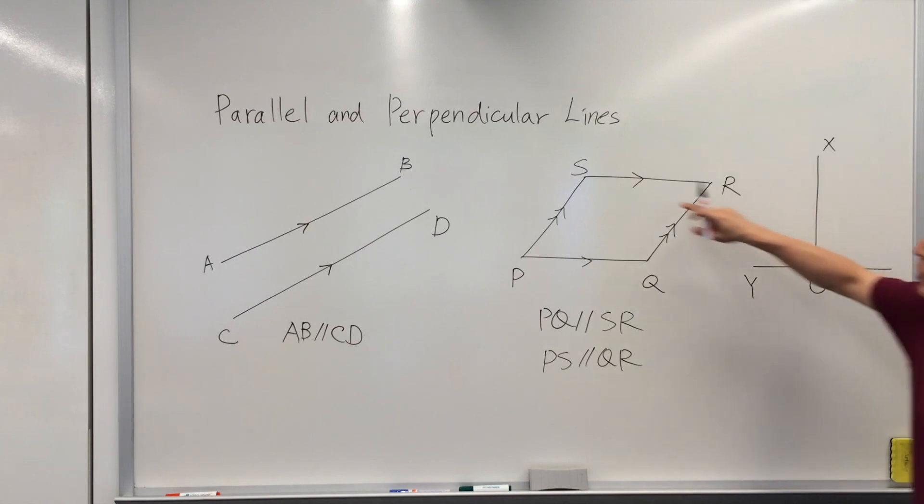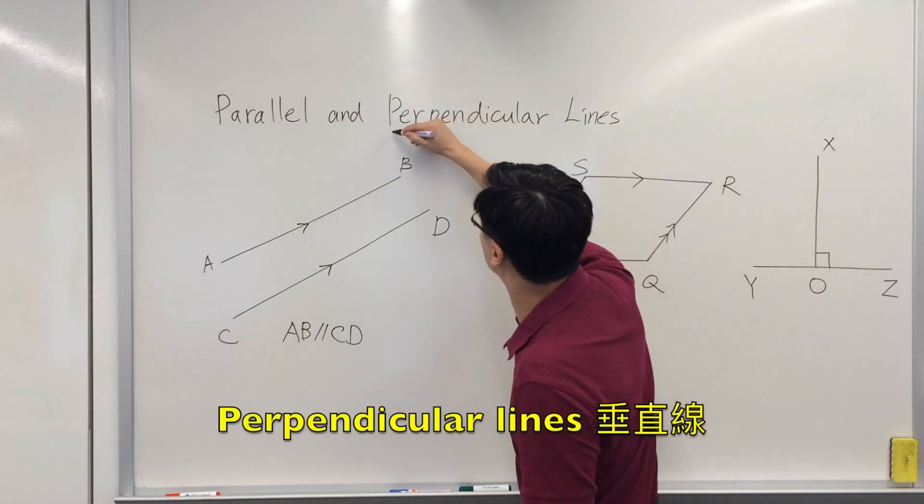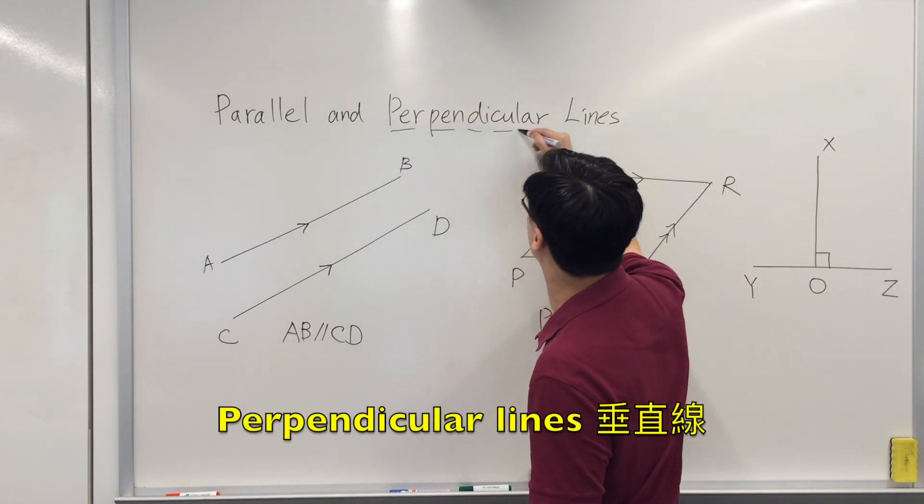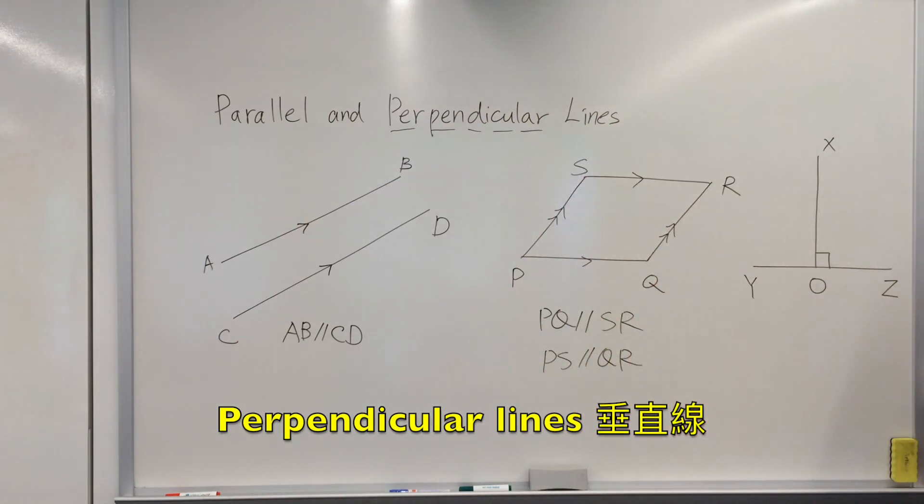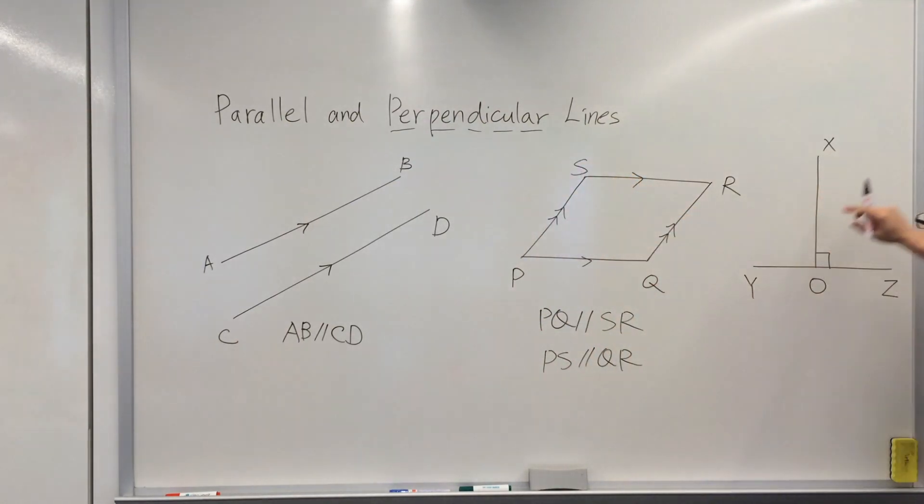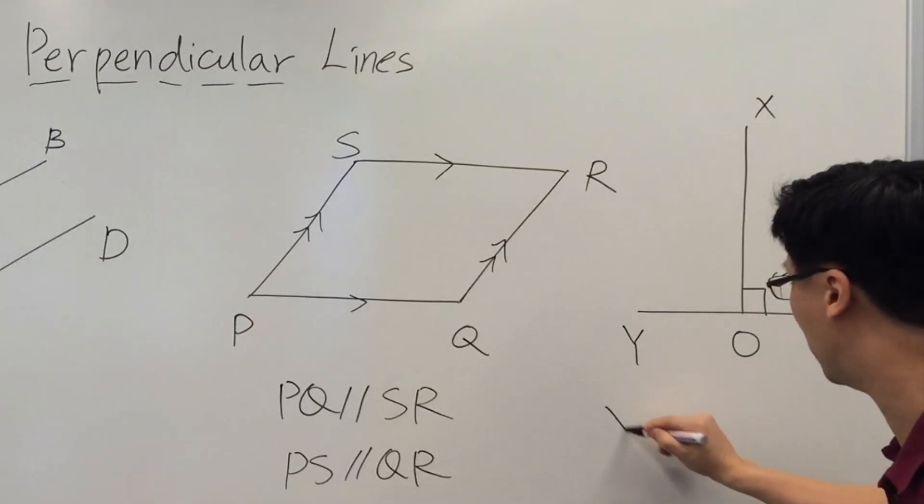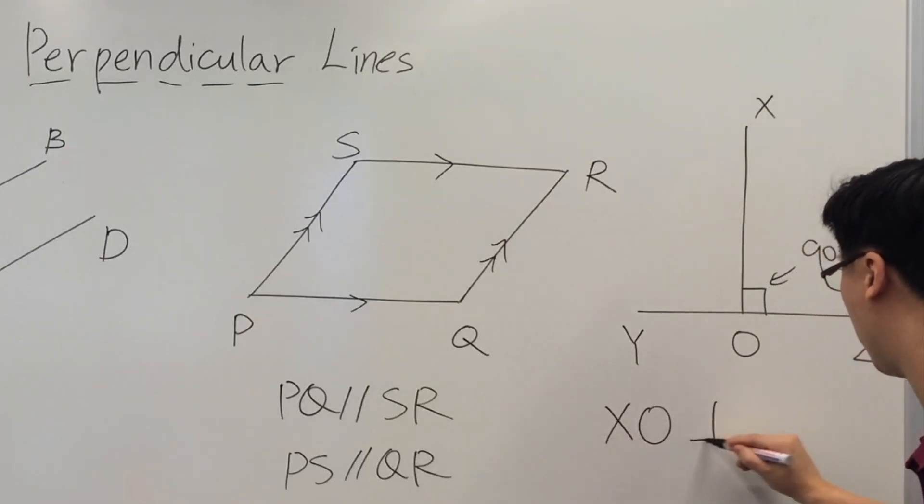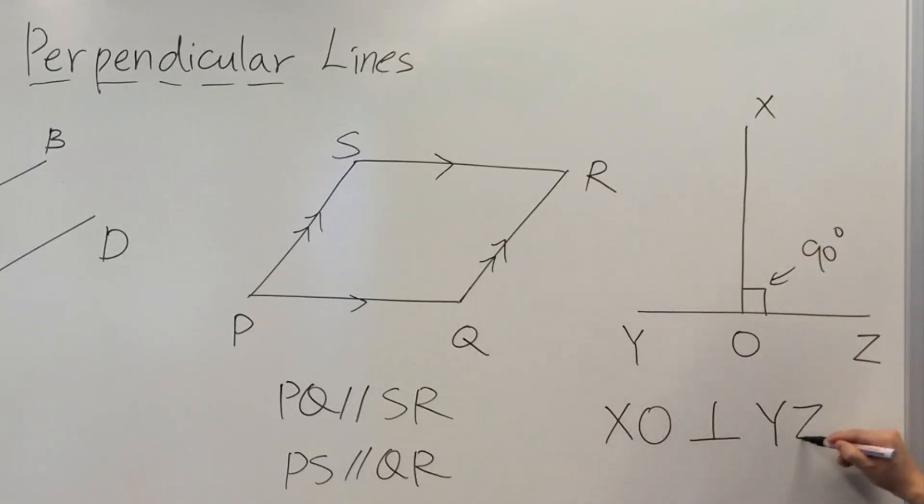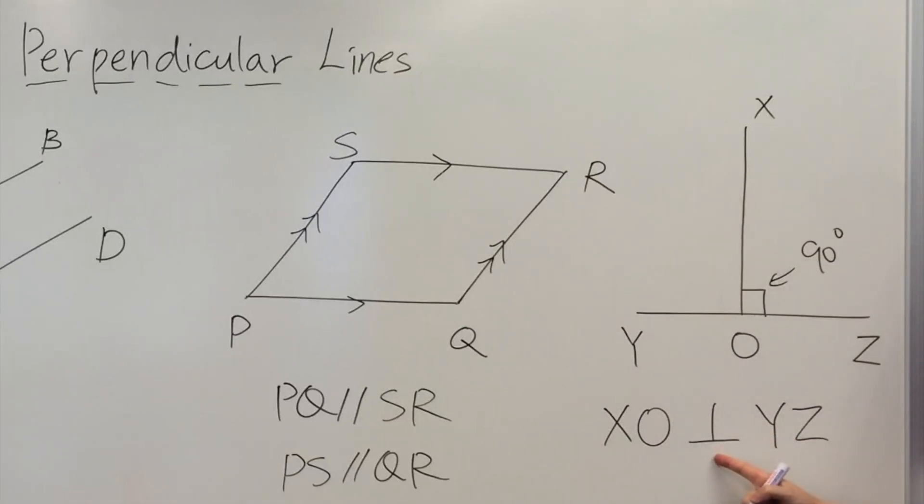Finally, for perpendicular lines, we can break the word into several parts. XO is perpendicular to YZ. This is a 90-degree angle, and therefore we can write XO perpendicular to YZ. We just draw a T turned upside down to represent perpendicular.